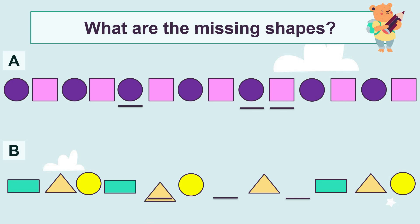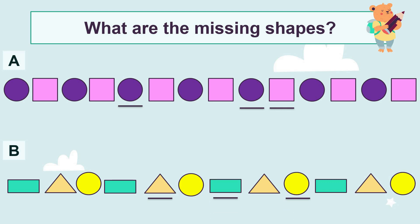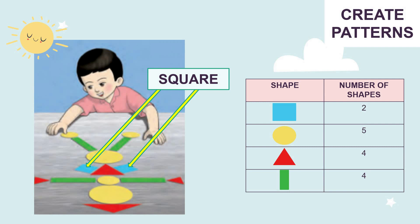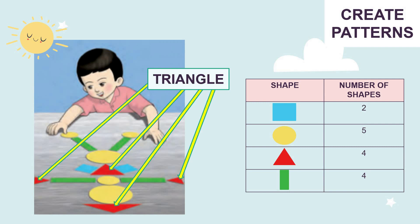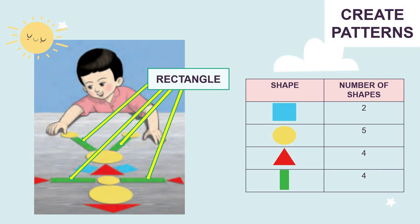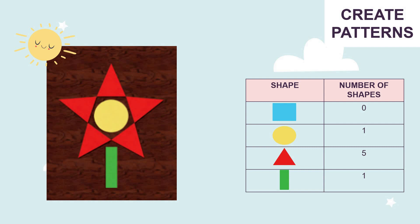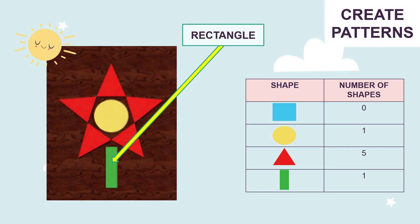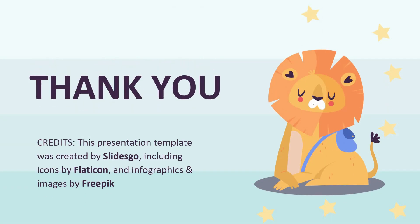Yes — triangle, circle, rectangle, triangle, circle, rectangle, triangle, circle. Now let's create patterns. Look at this image — there are two squares, five circles, four triangles, and four rectangles. Now let's look at this pattern — there are zero squares, one circle, five triangles, and one rectangle. That's all for me. Thank you everyone and have a nice day.